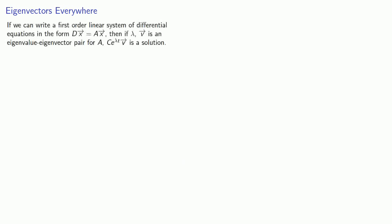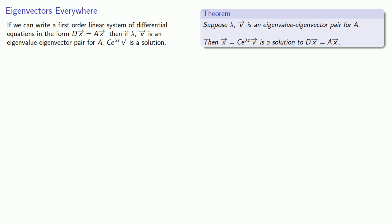Where were we? Oh yeah, if we could write a first-order linear system of differential equations in the form dx equals ax, then our theorem says that if lambda v is an eigenvalue-eigenvector pair for a, c e to power lambda t v is a solution to the differential equation.